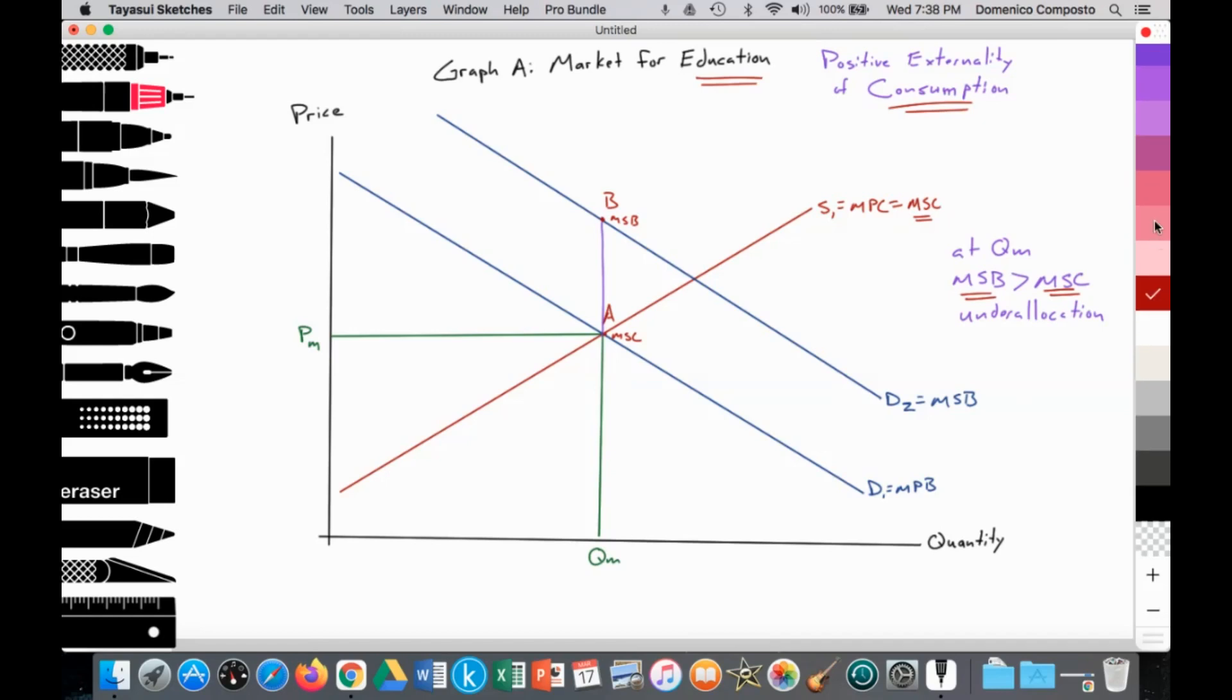So social optimum would be achieved where the marginal social cost equals the marginal social benefit at this point, point C. That would provide the optimal price and the optimal quantity. Price optimum and quantity optimum achieved at point C.